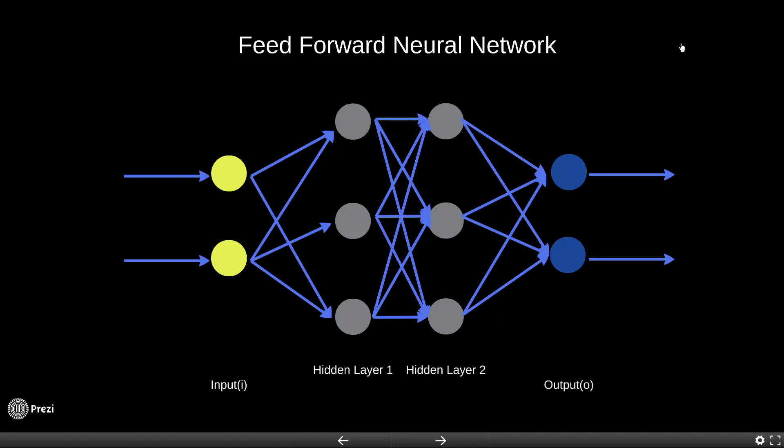In this network, the information only passes from left to right, that is in the forward pass. The information comes inside via the input layer, goes through the hidden layers, and then finally goes to the output layer.